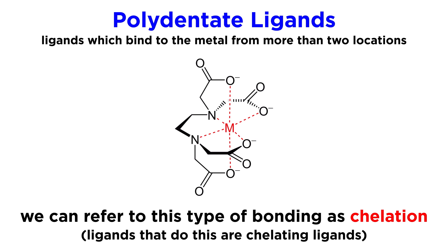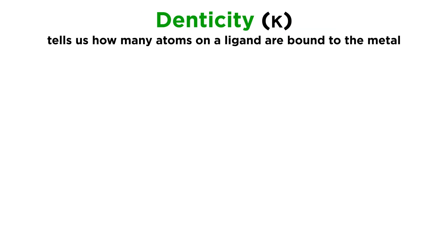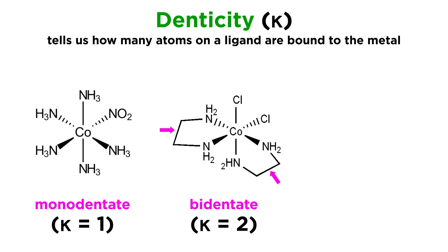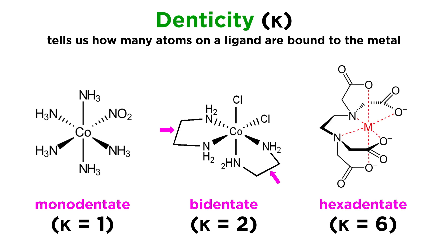There are many such ligands, and we will become familiar with some of them as we progress through the series. The denticity of a ligand is often represented by the symbol kappa, and this will describe how many atoms are bound to the metal. So a monodentate ligand has a denticity of one, a bidentate ligand has a denticity of two, and so forth, where ligands may even exhibit differing denticity depending on the situation.